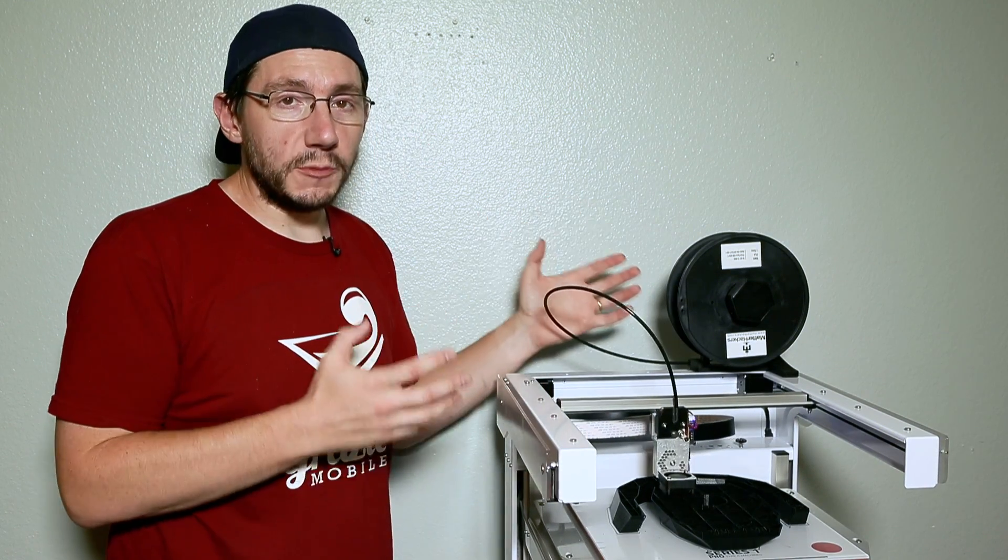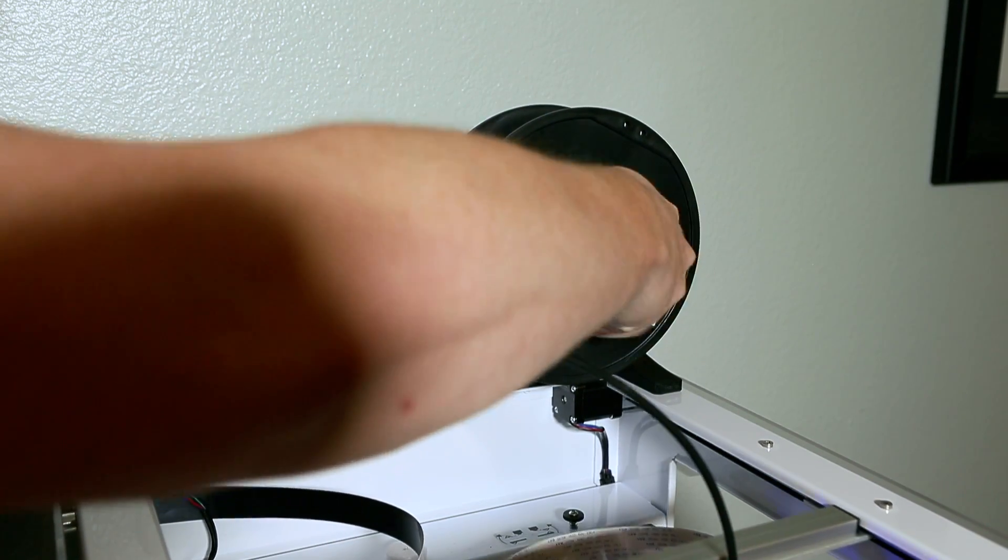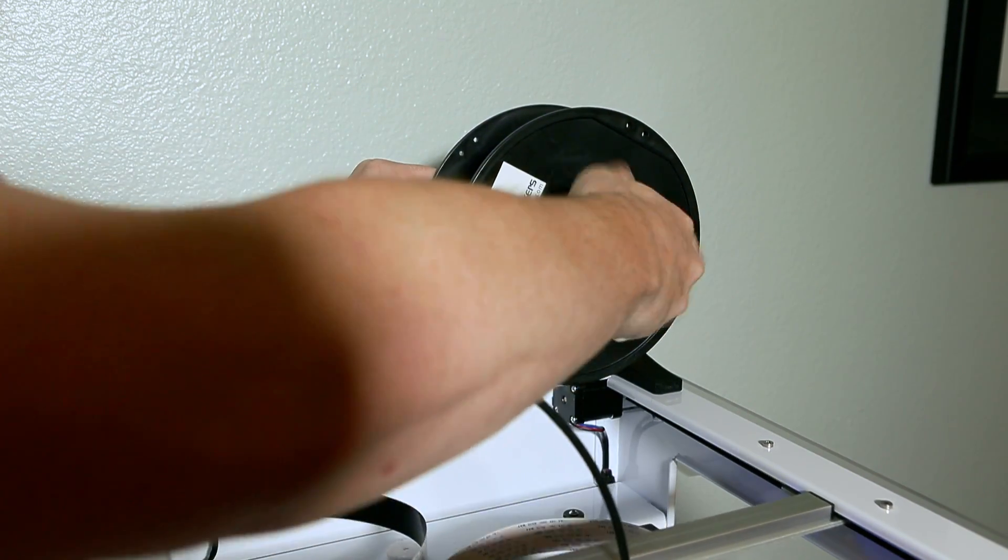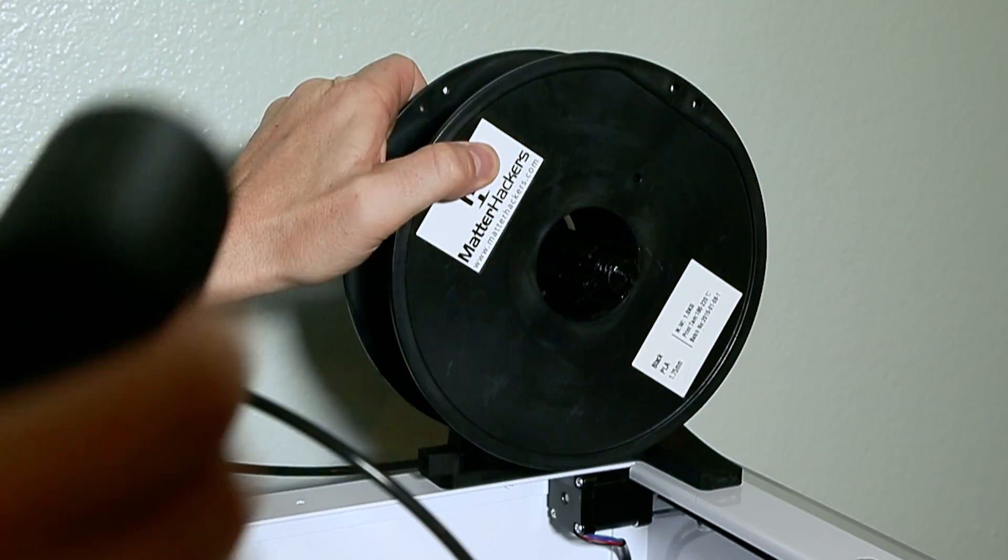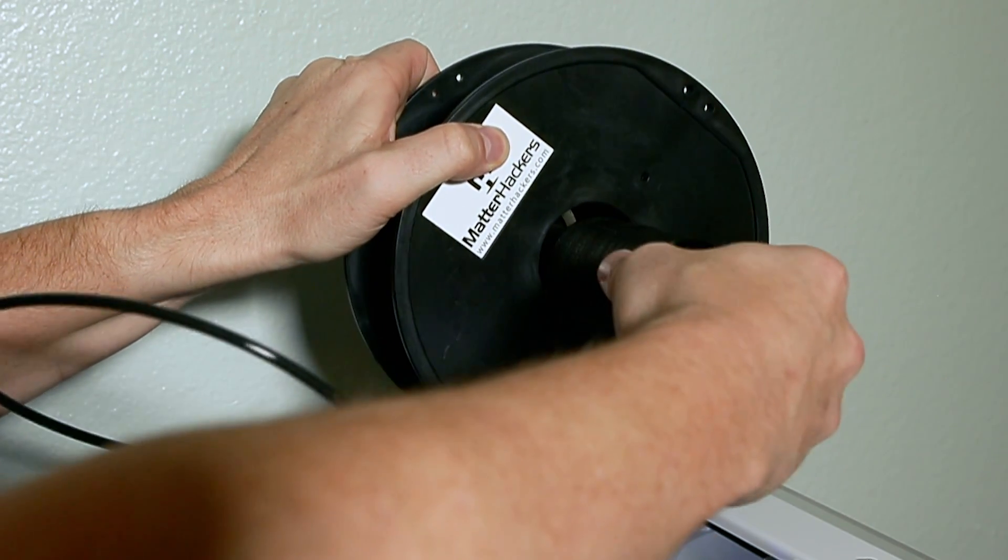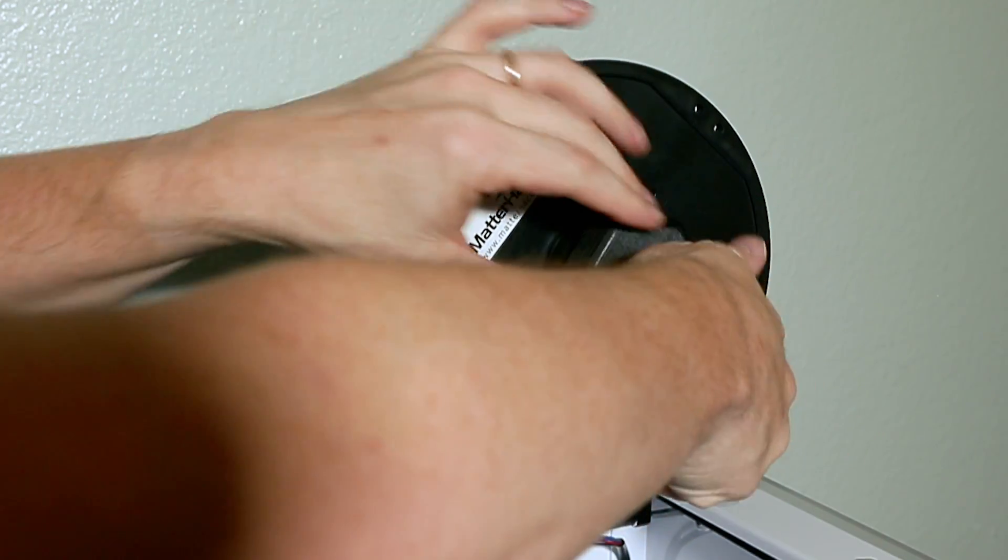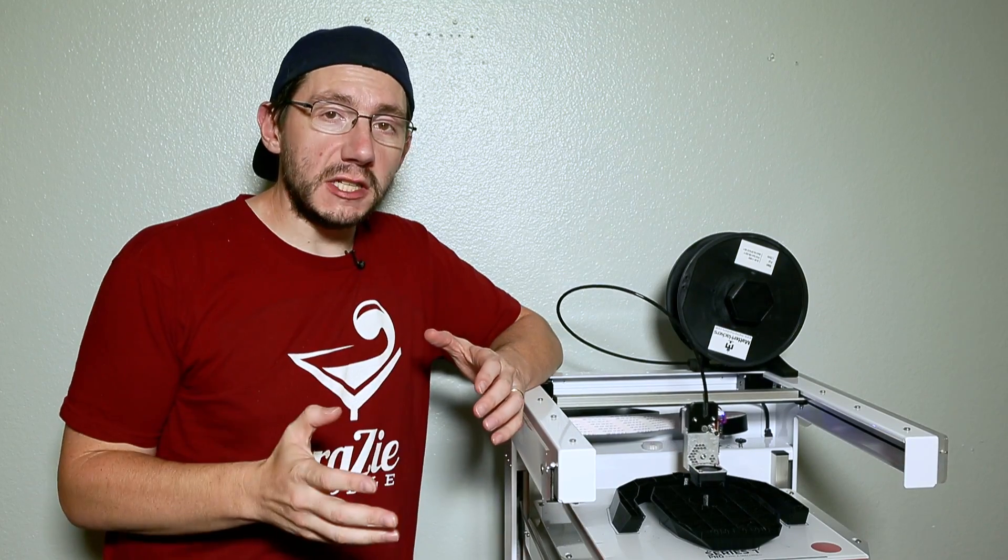This is a great spool holder for another reason and let me show you why. One of the cool features of this spool holder is the spacer in the middle. Right now it's set to larger inner diameter spools, but you can take that out and fit yourself a Taulman spool on there if you want, or something with a smaller inner diameter. It just slides in and out and this cap goes right back on. So that's pretty awesome as well.